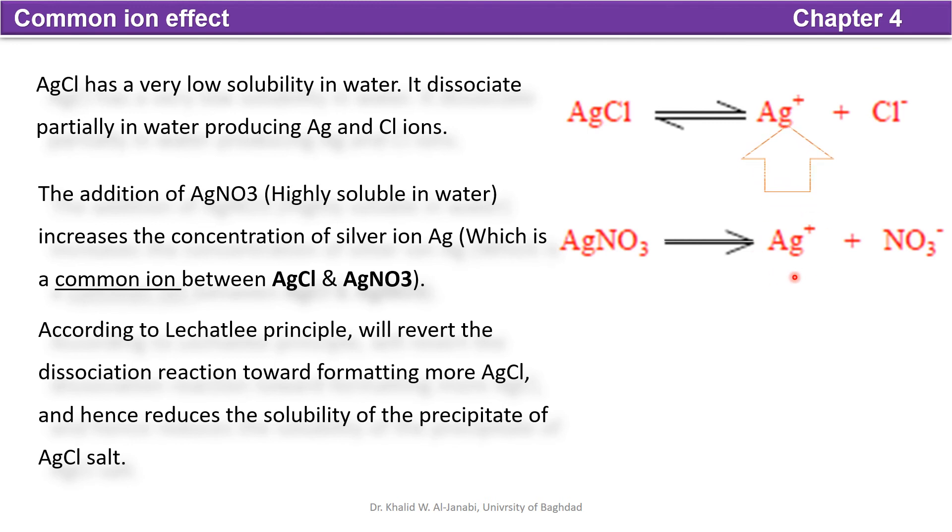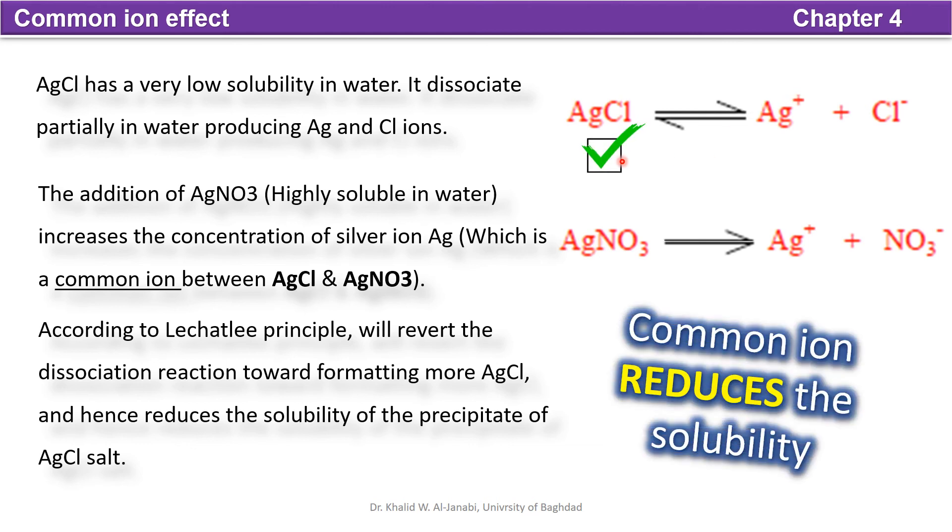See here, increase the amount of AgCl. So as per Le Chatelier's principle, this will revert the reaction above and will prevent it from dissociation. So this will reduce the solubility of the salt, of silver chloride salt. So common ion reduces the solubility.